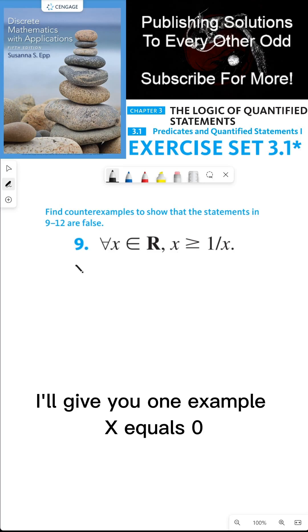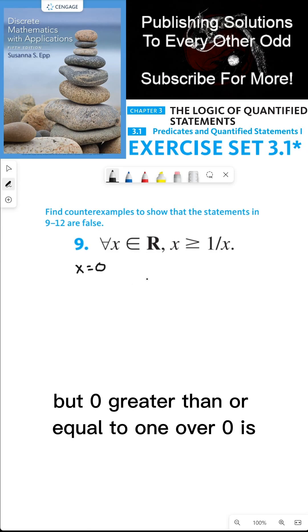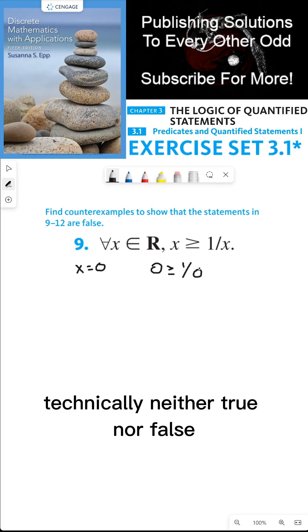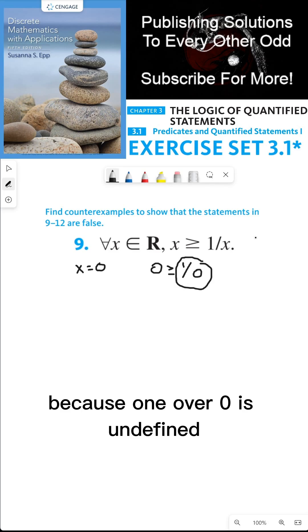I'll give you one example: x equals zero. X equals zero is a real number, but zero greater than or equal to one over zero is technically neither true nor false because one over zero is undefined.